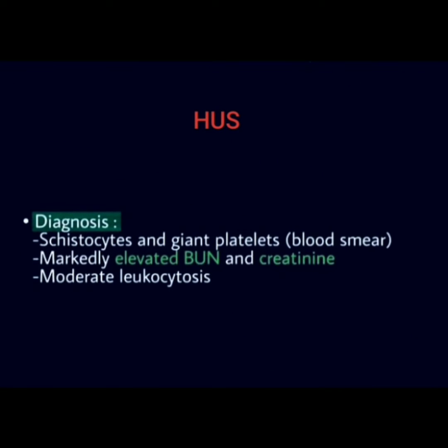Diagnosis of Hemolytic Uremic Syndrome is made by: schistocytes and giant platelets on blood smear, markedly elevated blood urea nitrogen and creatinine, and moderate leukocytosis.